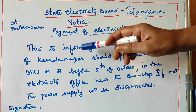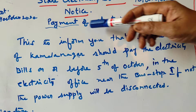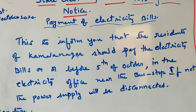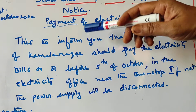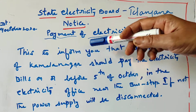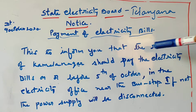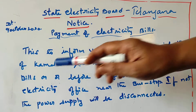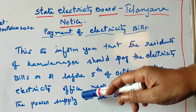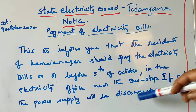Once again I read this: 'This is to inform you that' — this opening phrase is common for all notices. Whatever notice you write, you can start with this. 'This is to inform you that the residents of Kamalnagar should pay the electricity bills on or before the 5th of October at the electricity office near the bus stop. If not, the power supply will be disconnected.'